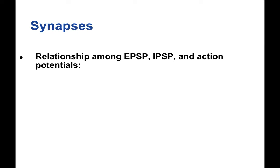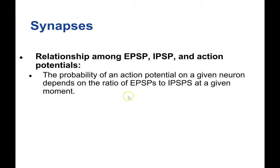What's the relationship then between EPSPs, IPSPs, and action potentials? EPSPs and IPSPs are the voltage changes created in post-synaptic cells that lead to an action potential or not. In reality, the probability of an action potential on any given neuron depends on the ratio of EPSPs to IPSPs at a given moment. At every moment, the post-synaptic neuron is weighing the excitatory and inhibitory input it's receiving. If the excitation outweighs the inhibition, you're more likely to have an action potential. If the IPSPs outweigh the EPSPs, you're less likely to have an action potential.